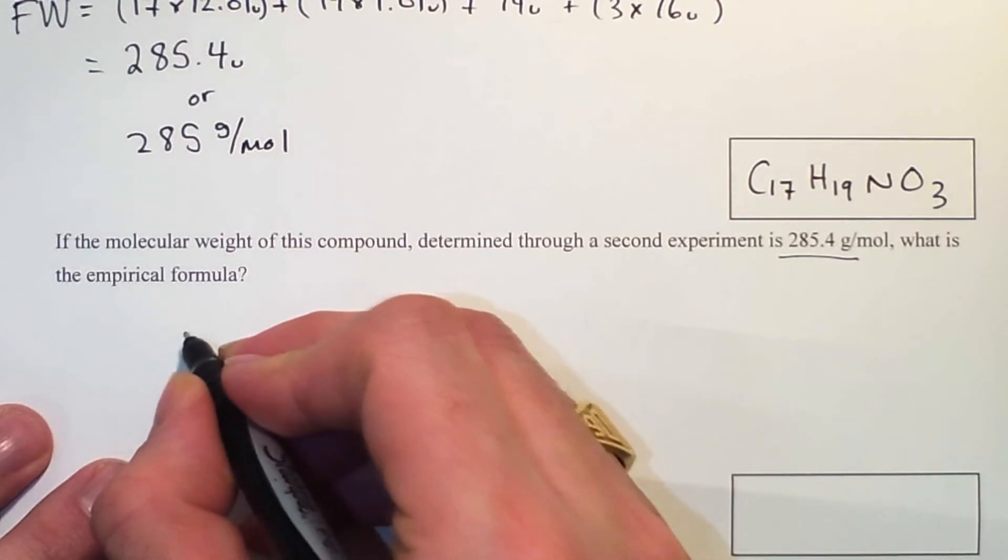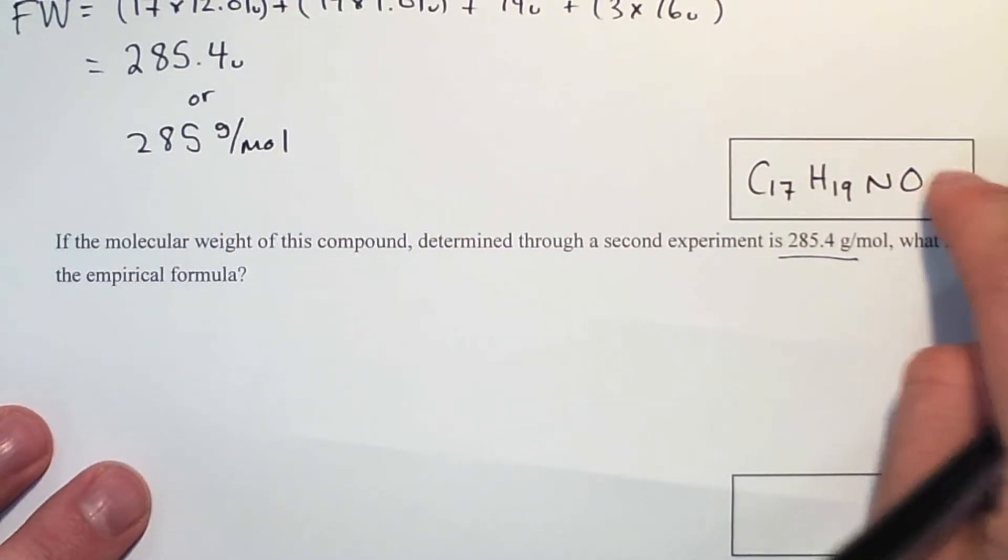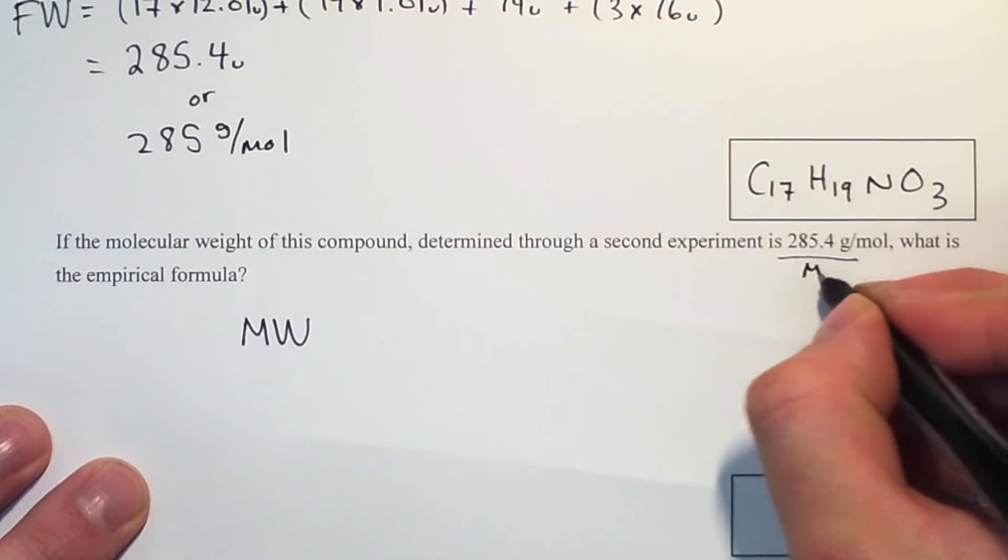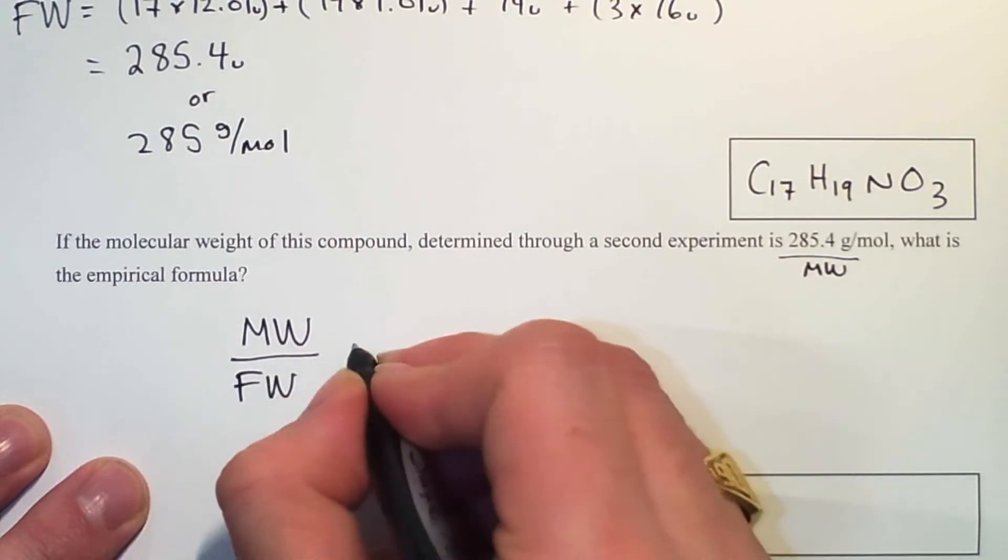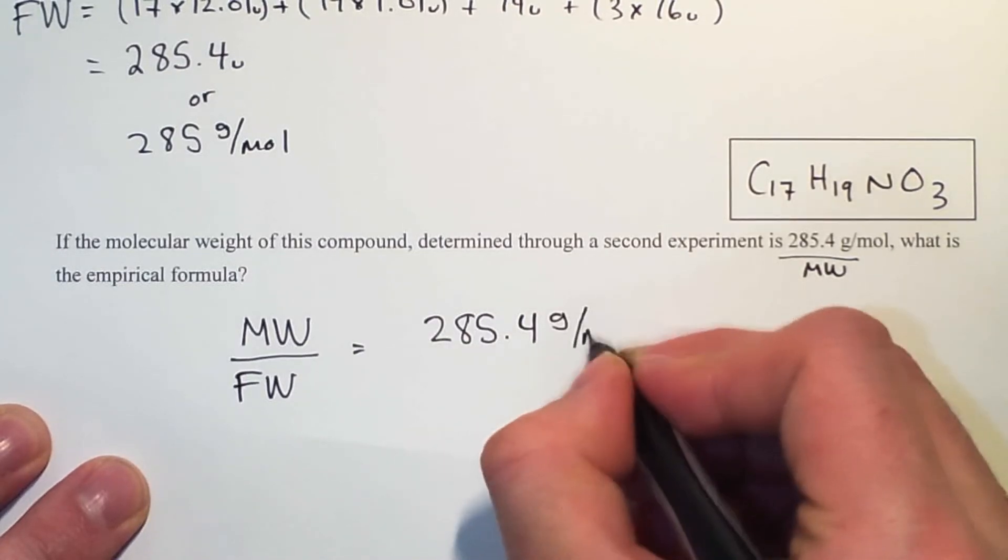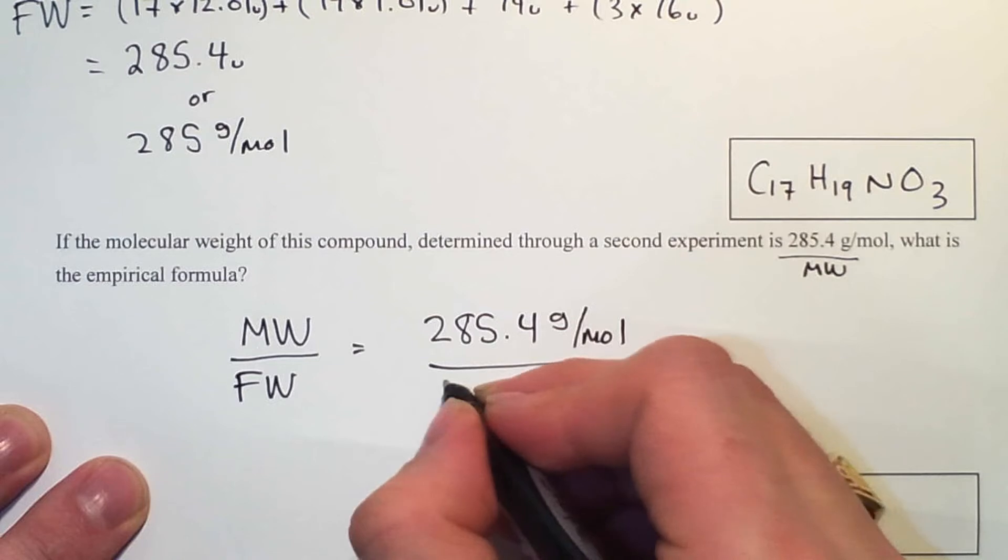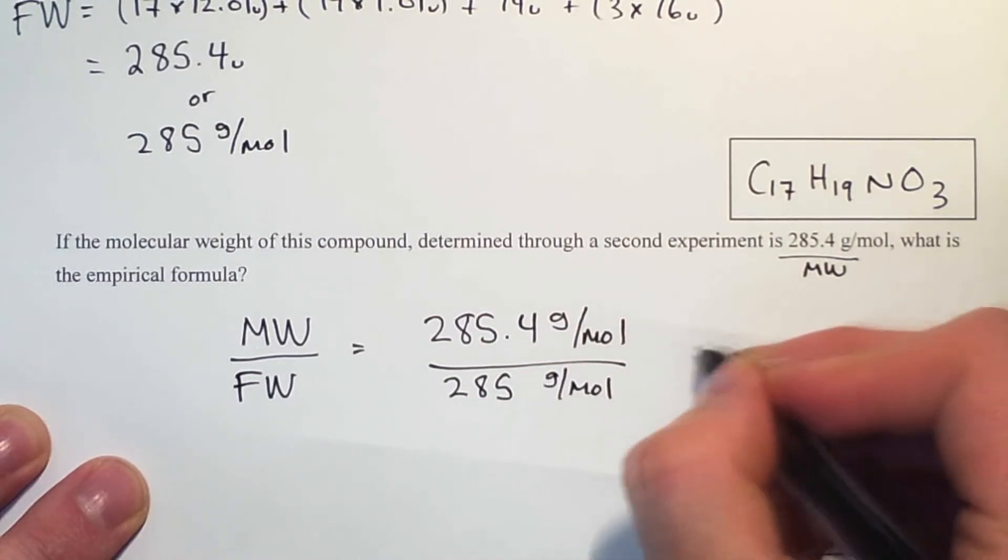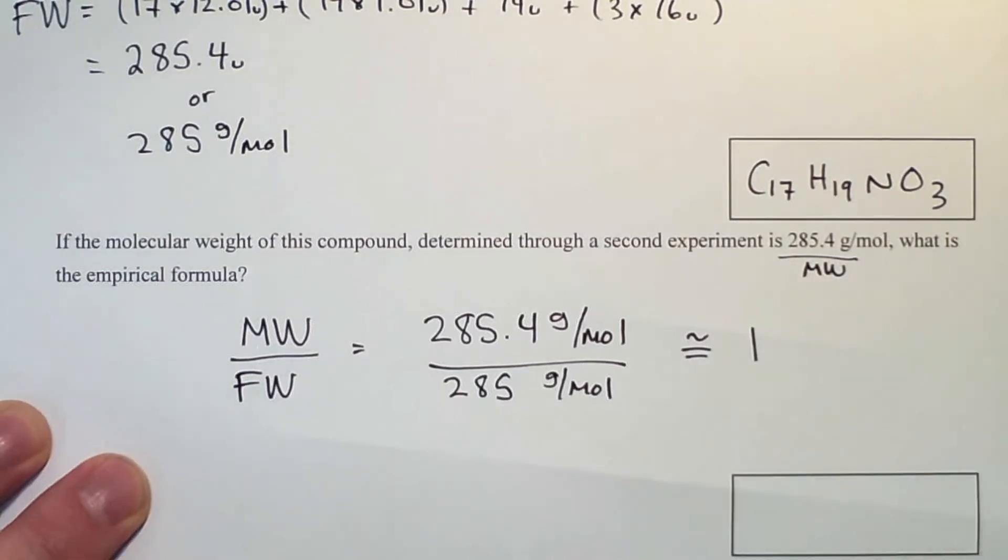So what we're going to do to determine what the molecular formula is, is we take the molecular weight given and divide it by our formula weight. So that's 285.4 grams per mole divided by 285 grams per mole, which is approximately equal to 1.